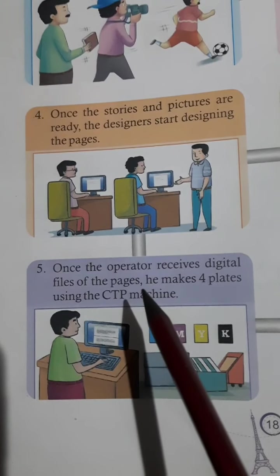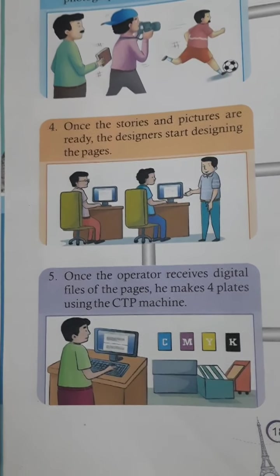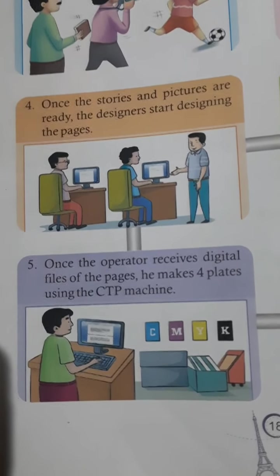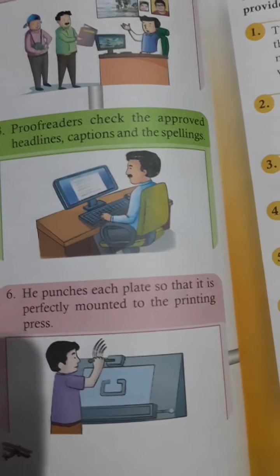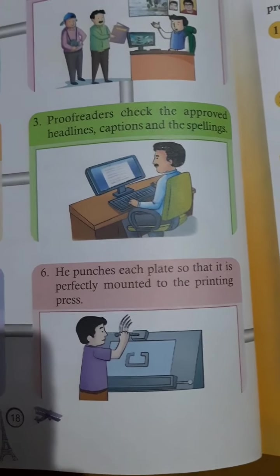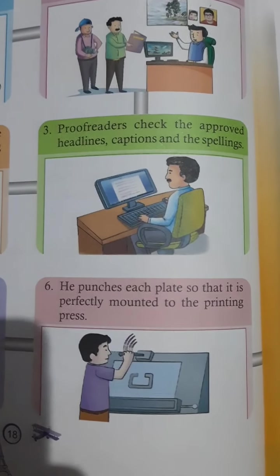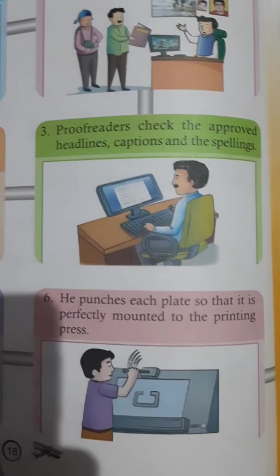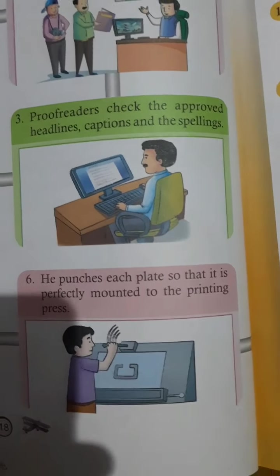What happens here? This is a type of printing machine. It goes directly to the plate. He punches each plate so that it is perfectly mounted to the printing press.